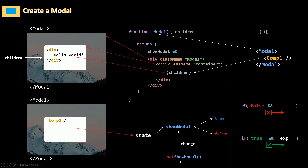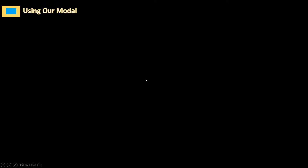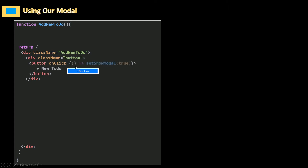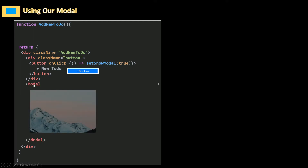The showModal and setShowModal are going to be received using props. To use the modal everywhere, I'm going to export default the modal. Now let's go and use our modal — for example inside our AddNewTodo component. We're going to return some JSX with a button, and when I click on that button I'm going to set showModal to true to show the modal. I'll call the modal after importing it, then put whatever I want to show inside.